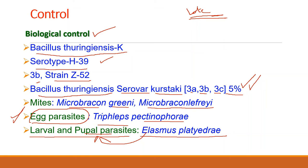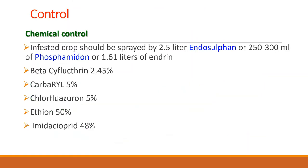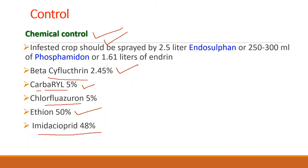Regarding chemical control, spraying of the following chemicals is quite effective: beta-cyfluthrin 2.45%, bifenthrin 10%, carbaryl 15%, chlorofluazuron 5%, chlorpyrifos 50%, ethion 50%, and imidacloprid 48%.